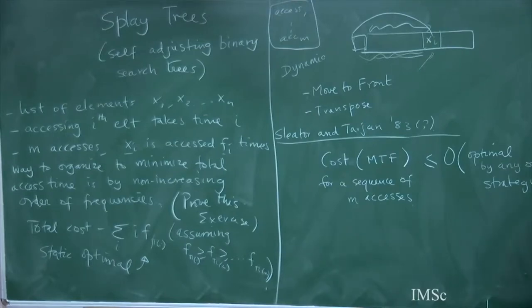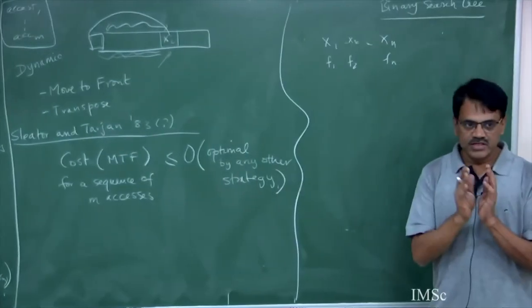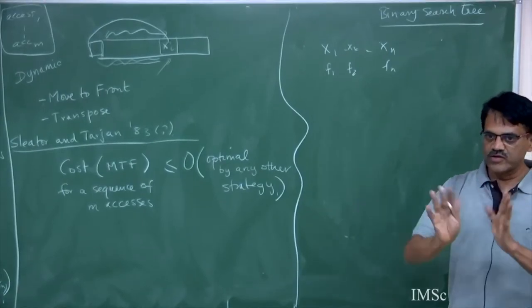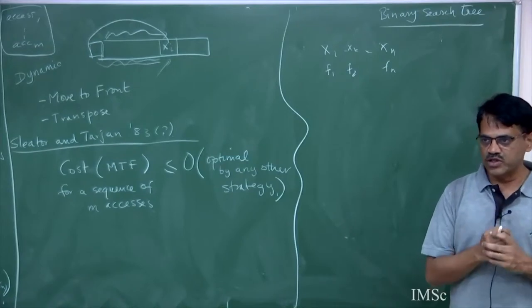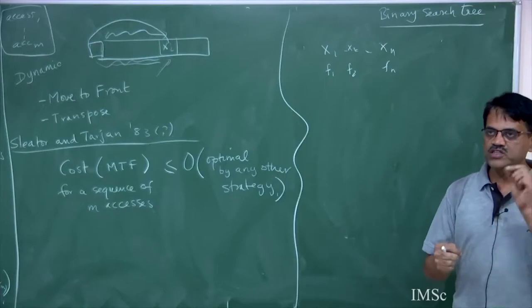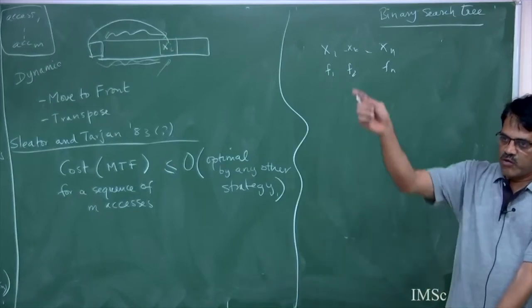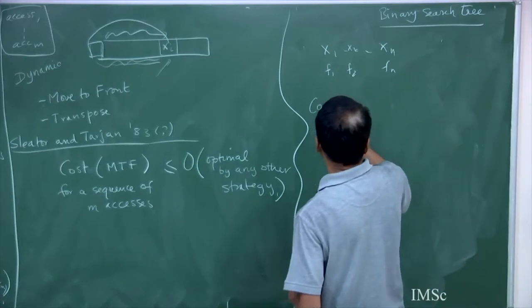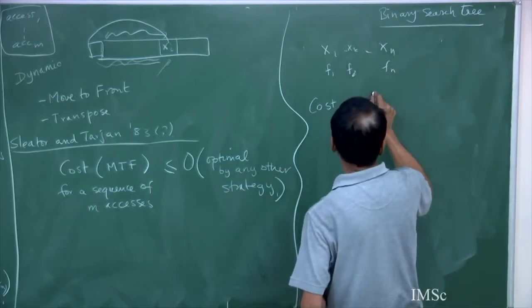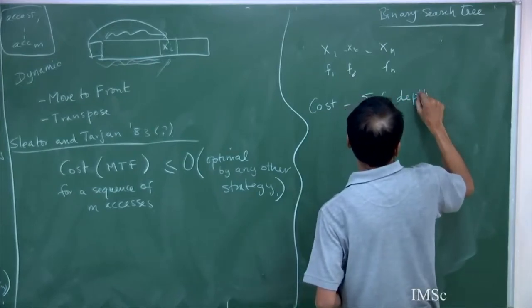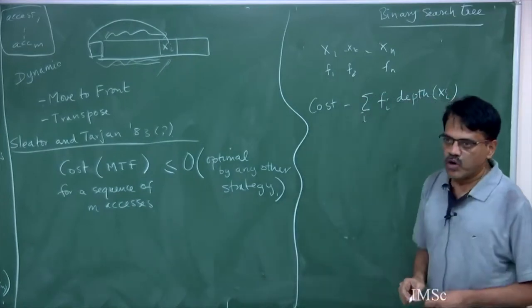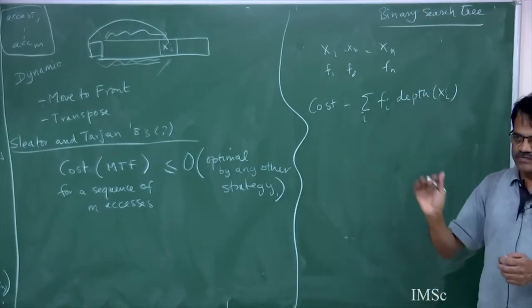I want to maintain keys x1 to xn from an ordered set. I am told that x1 is going to be accessed f1 times, x2 accessed f2 times, and xn accessed fn times. I want to organize this statically — everything is static, you are given preprocessing time. What is the best way to organize your tree so that the total cost is minimized? The cost of accessing xi is the depth of wherever xi falls in the tree.